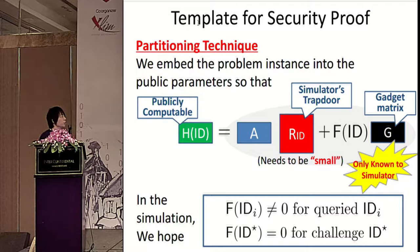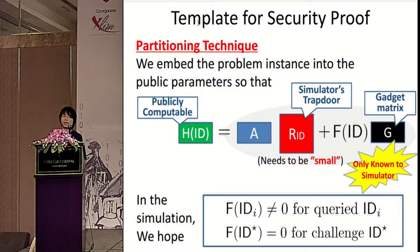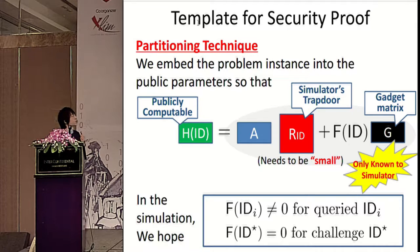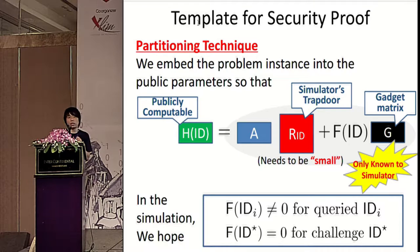During simulation, for secret key queries we want F(ID) ≠ 0. When that happens, the gadget matrix can operate, so using the simulator's trapdoor and the gadget matrix, we can sample a short vector as in the real world. However, for the challenge ciphertext, we want F(ID*) = 0, because then we lose the information on the gadget matrix. Without the power of the gadget matrix, the simulator's trapdoor is useless, but we can embed the LWE instance into the challenge ciphertext. So we need this partitioning to happen during simulation.